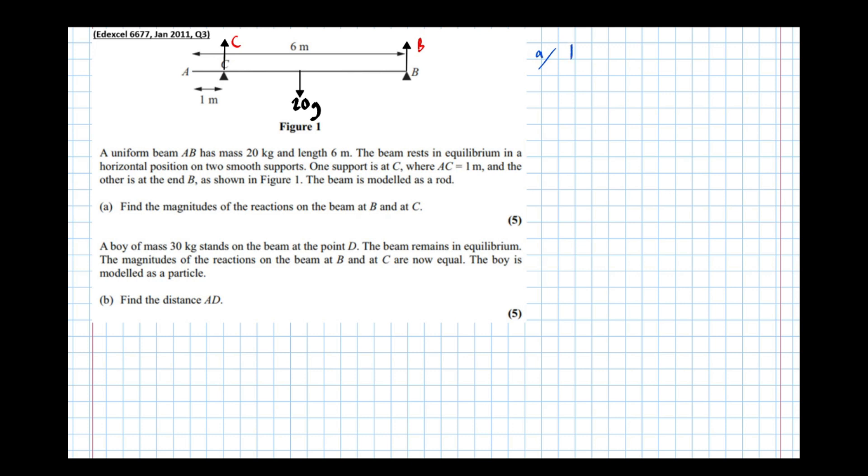So I'm going to resolve forces vertically. So all the forces pointing up are B plus C, take all the forces pointing down 20G, equals mass times acceleration. Acceleration is zero because it's in equilibrium, so that means B plus C equals 20G. We've got an equation.